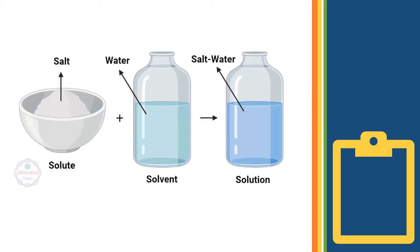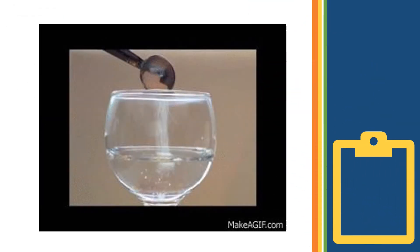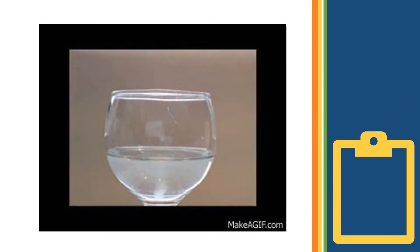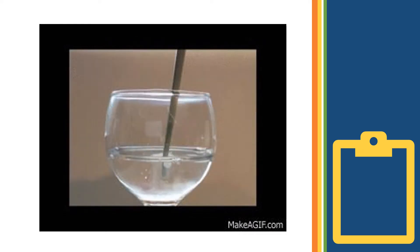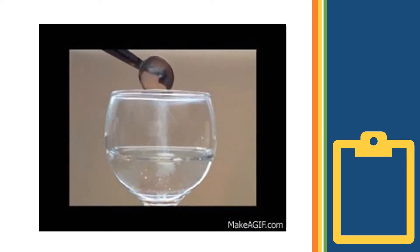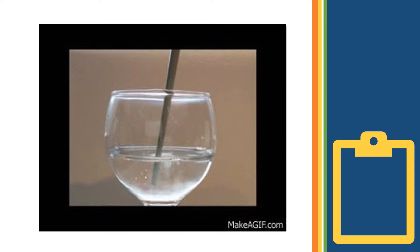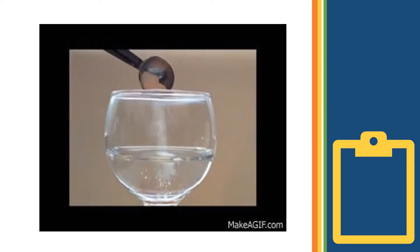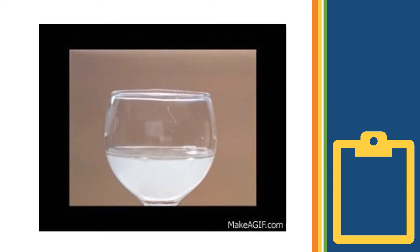A mixture of solute and solvent is called a solution. Take a spoonful of sugar and add it to a glass of water. Stir the mixture properly.